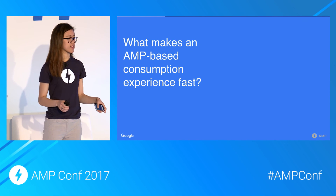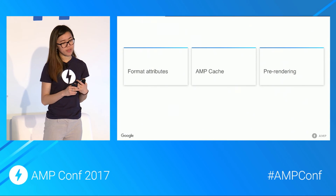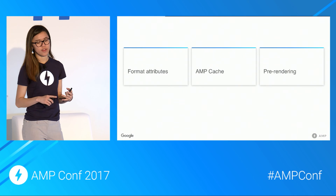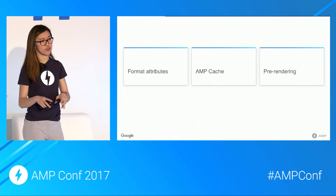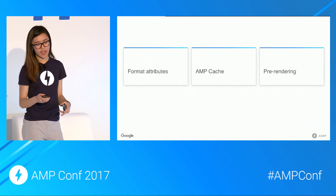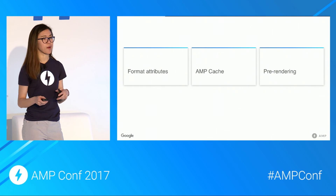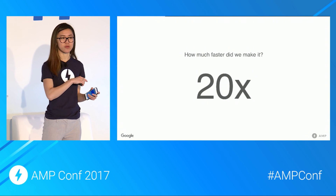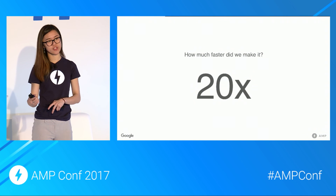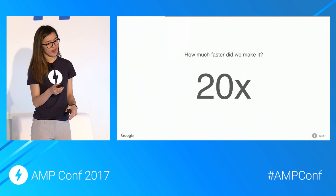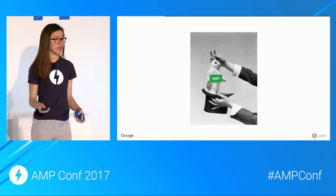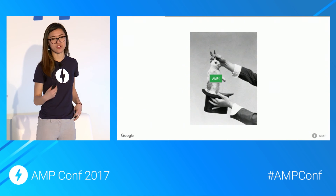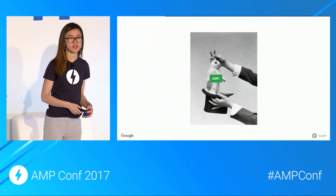So all in all, what makes an AMP-based experience really fast? It's these three pillars contributing to an awesome pre-rendering experience: the format attributes of pre-rendering mode, the AMP cache's insurance that all documents are valid so you can have pre-rendering mode for your entire experience, and the pre-rendering strategy you choose. We actually made the experience about 20 times faster, reducing median load time from a search result click to the user seeing the page to less than a second. That means in many cases we've achieved instant. As you build your AMP-based user experiences, think about your pre-rendering strategy and how it works with your UX — and we hope you can also achieve instant AMP experiences. Thank you.